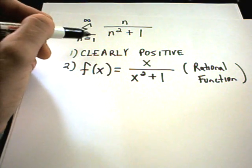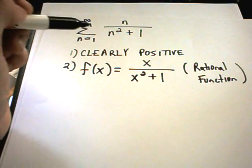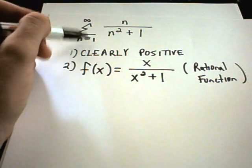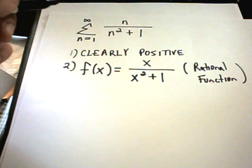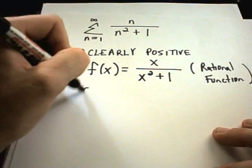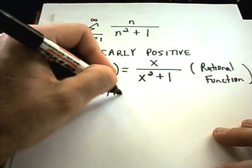All it really needs to be is continuous from 1 to infinity, because that's where I'm using my limits on my summation. So it's certainly continuous, that's not a problem.